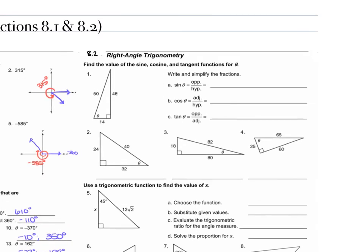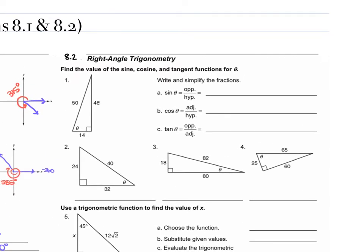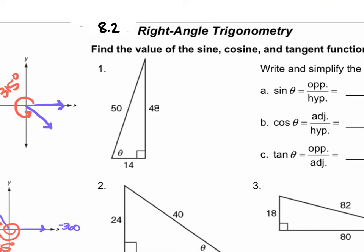For our 8.2 questions, we're finding sine, cosine, tangent, cosecant, secant, and cotangent. For problem 1, we're given a right triangle with side lengths of 50, 48, and 14. Identify your opposite, adjacent, and hypotenuse first. The hypotenuse is across from the right angle, so 50 is our hypotenuse; opposite theta is 48, and adjacent to theta is 14.